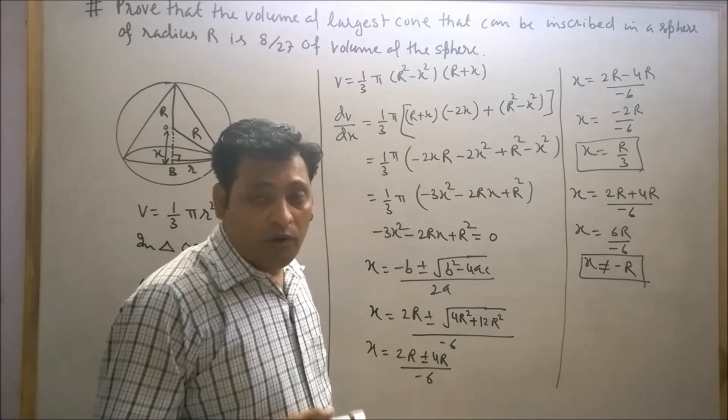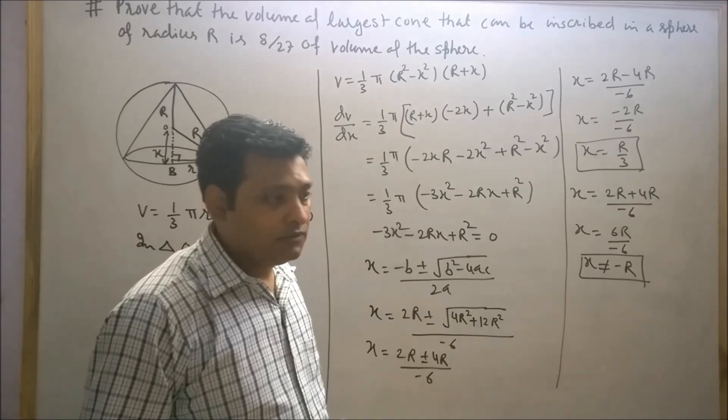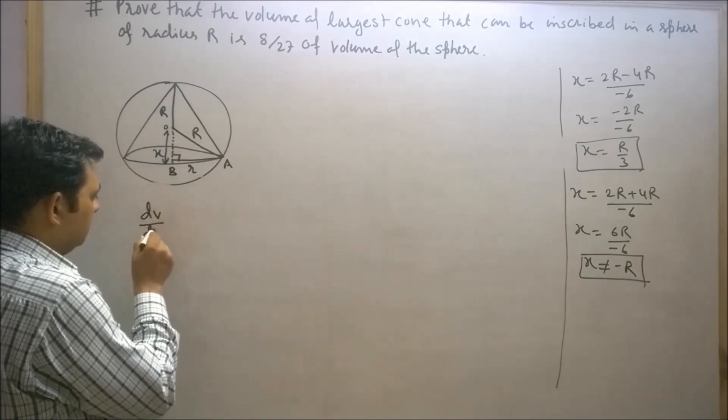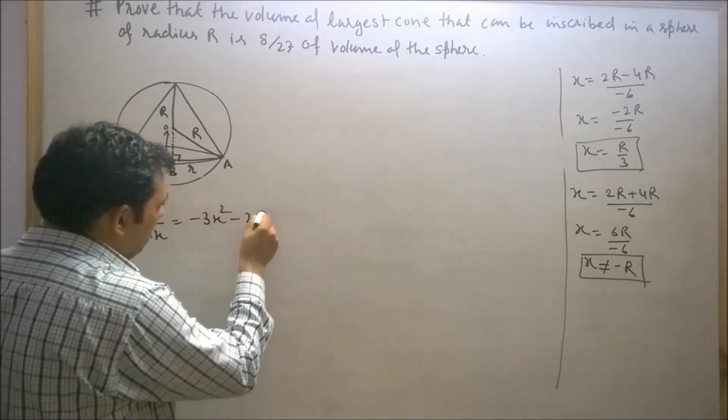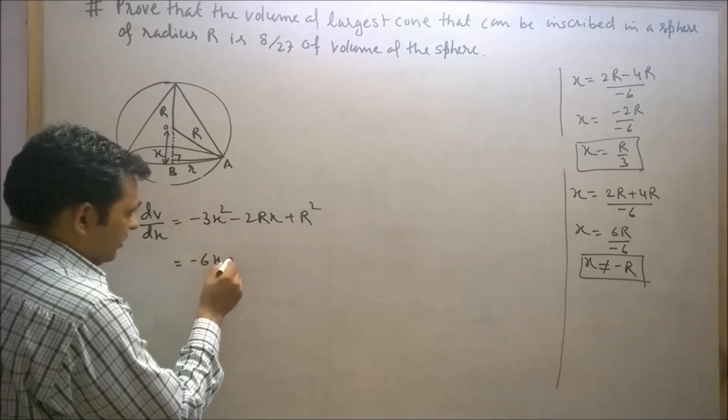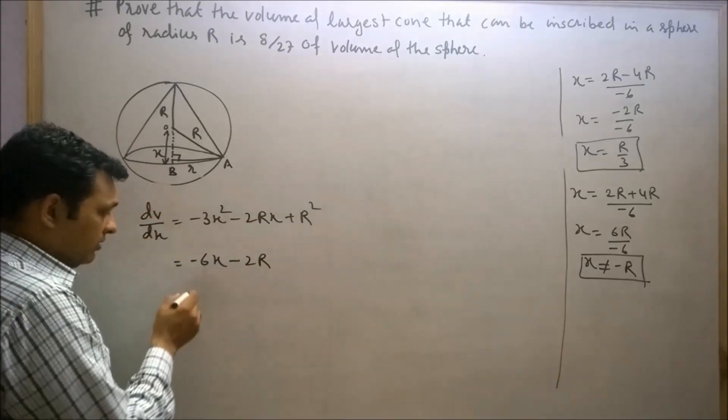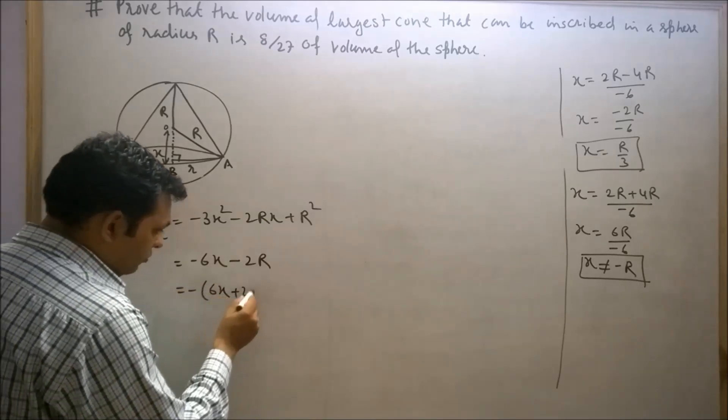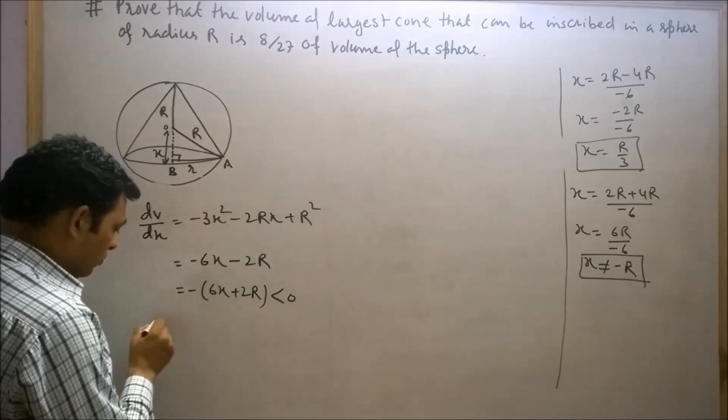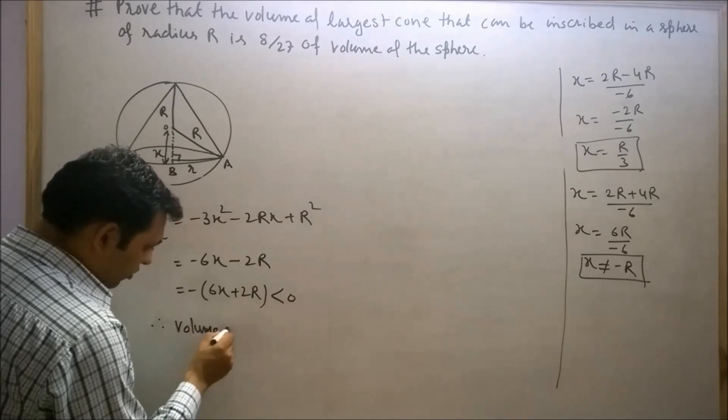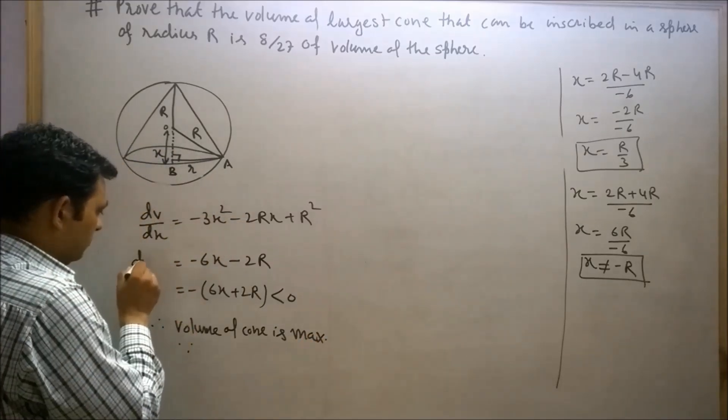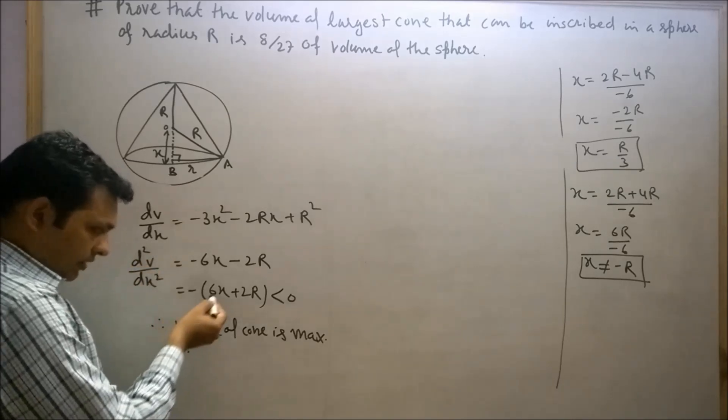Now we will prove that the volume of the cone is maximum by using the second order derivative test. We have obtained dV/dx as 1/3 π(-3x² - 2Rx + R²). Now again differentiate this. This will be 1/3 π(-6x - 2R), which equals -2(3x + R). This is less than 0, so the volume of the cone is maximum.